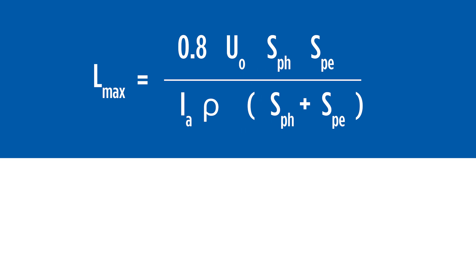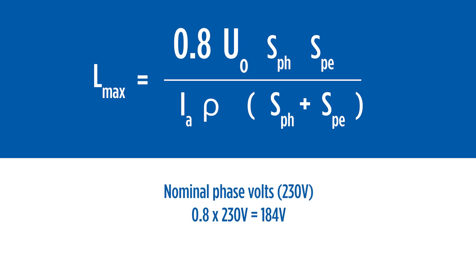When an installation's external impedance is unknown, it can be assumed that at least 80% of the phase voltage will be available at the protection device during a fault situation. In most cases, the external circuit's impedance will be low enough to allow for higher voltage values at the protection device. However, using the 80% voltage value will ensure calculated maximum lengths are always safe.